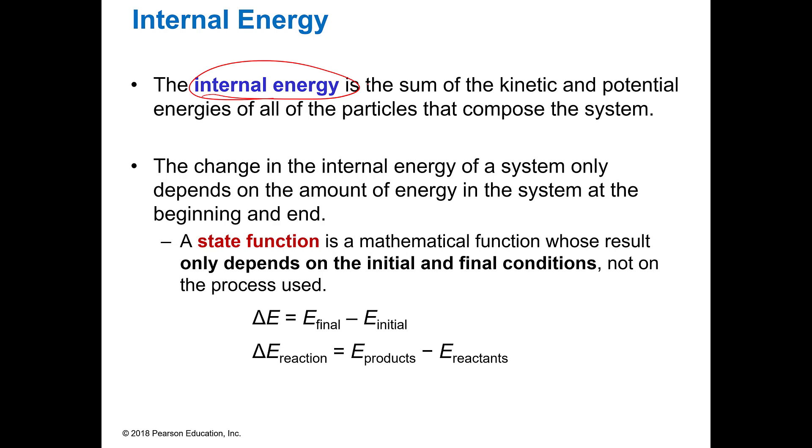The internal energy is the sum of all the kinetic and potential energy of everything in the system. And the change in the system depends on the amount of energy in the system at the beginning and at the end. Because we look at the energy at the final and energy at the initial. And whatever that is, is that delta E, that change in energy. The other way to look at that is the products minus the reactants. That also gives you the delta E of the reaction. This is what we call a state function because it doesn't depend on how you get there. It just depends on the beginning and the end.